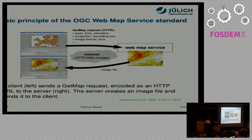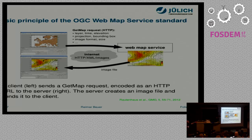The basic principle — as we heard — is that we have a server which has data, and a client which can request data via a GetMap request. The extension we have is that we not only get the data, we also get the plot. The client requests a layer, time, elevation, and some projection type, and then visualizes the plot. This means we have petabytes of data somewhere, and only at the location where scientists and pilots plan the aircraft mission together can they exchange data by looking at the same images.